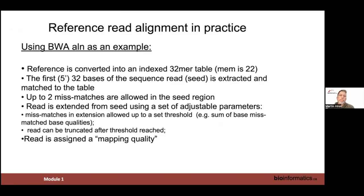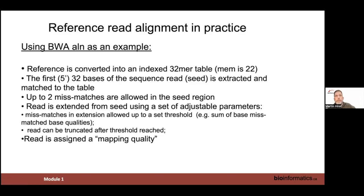In practice, BWA align uses a 30-mer index table for shorter reads; BWA MEM uses 22-mers. The first 32 bases of a read are aligned to the table with up to two mismatches allowed in the seed region by default — a parameter you can change. The read is then extended from where the seed matches the reference to some threshold, using base qualities to determine how far to extend.